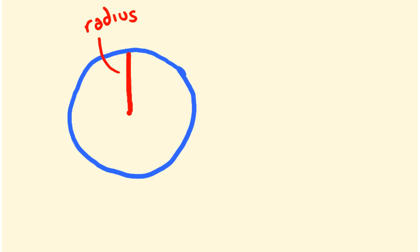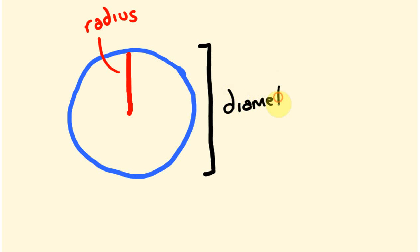Or we can use another measurement where we're looking at this whole entire distance across the circle, and this is known as the diameter. What you might realize is that the diameter is twice the radius, because the radius is halfway across — it's the center to the edge. There's a radius there and a radius there, so the radius is half of the diameter. That's a really important thing to know, because we're going to use the radius to work out the circumference of the circle.